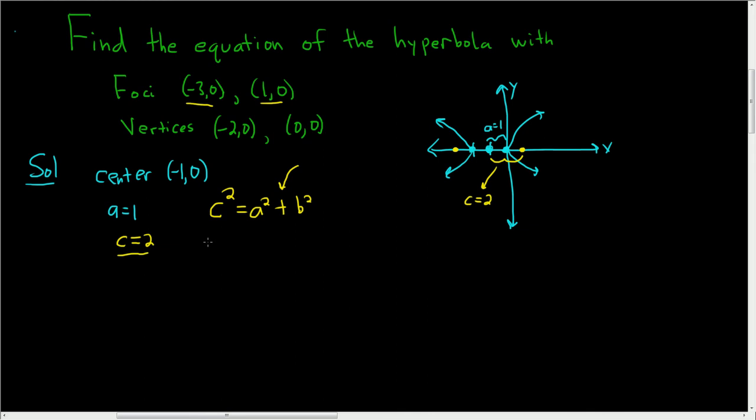c is 2, so we get 4 equals 1, because 1 squared is 1, plus b squared, subtract 1. And so b squared is equal to 3.